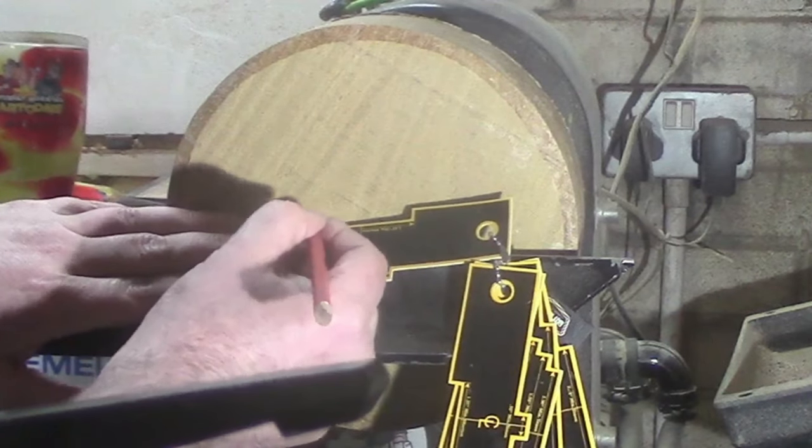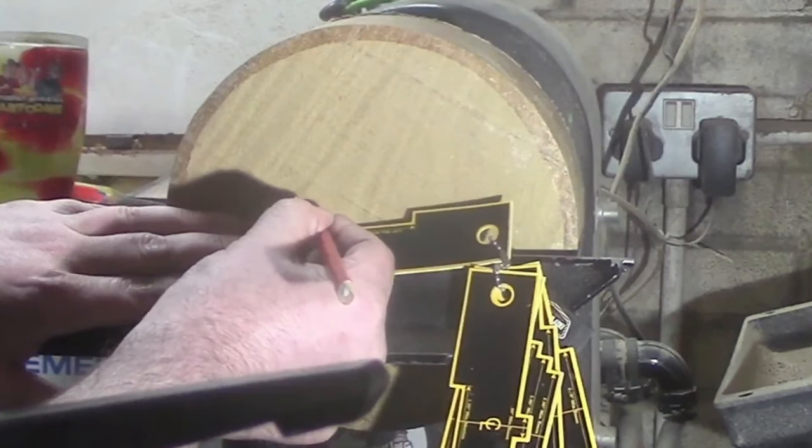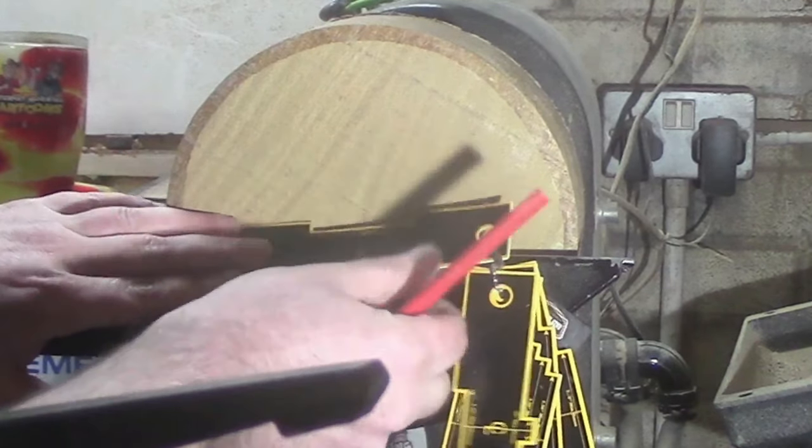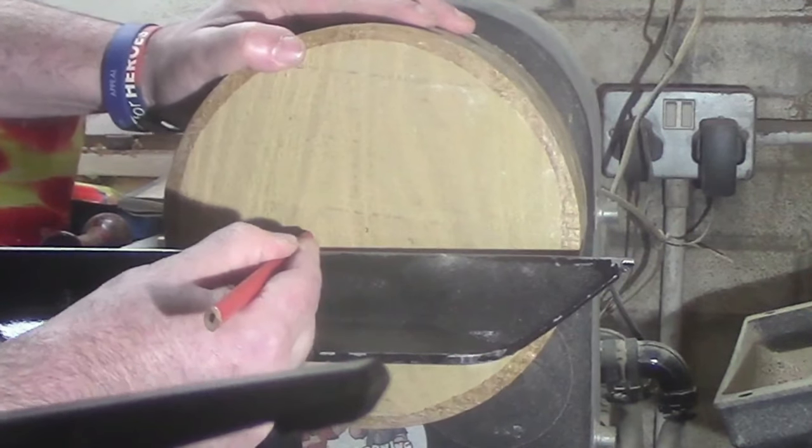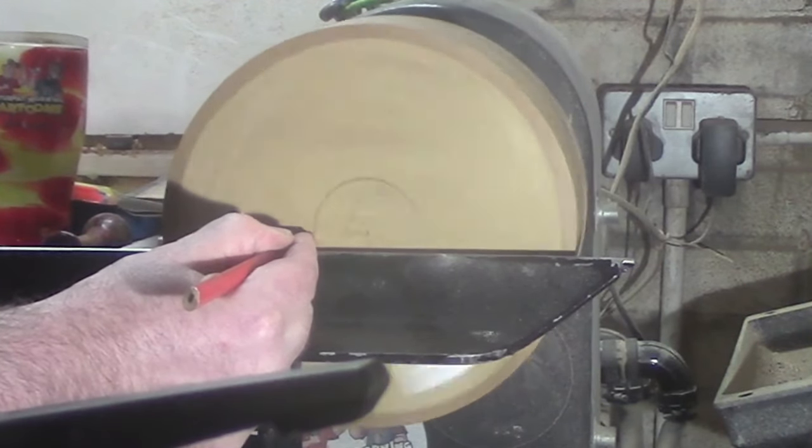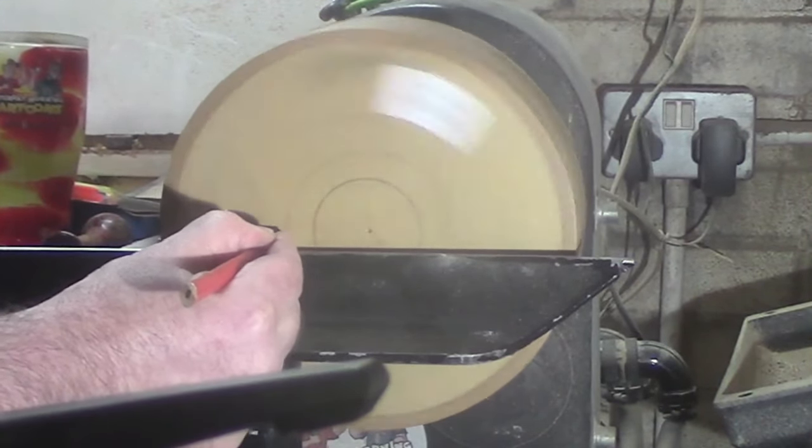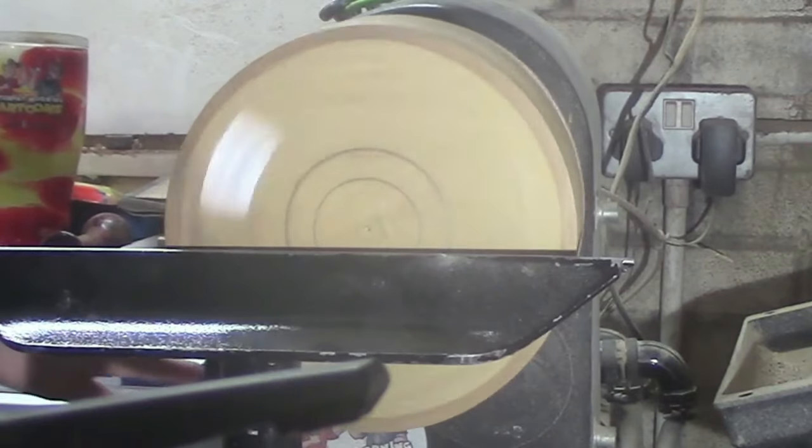Welcome back everybody, so this week's video we're going to turn a simple bowl from acacia wood. We've just marked out there for the mortise that's going to go into the bottom, and there is the marking out for the foot.